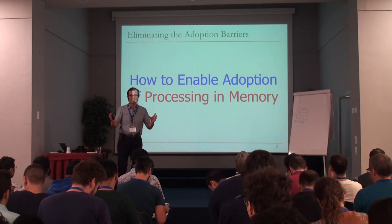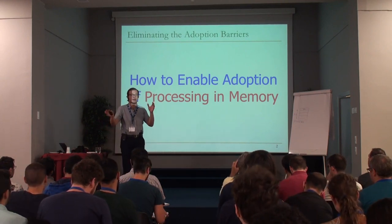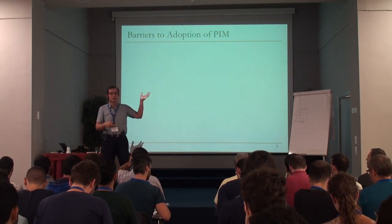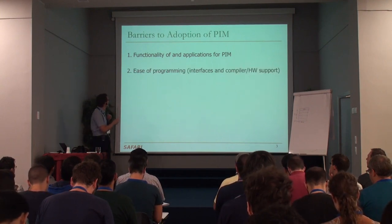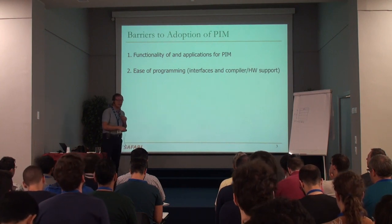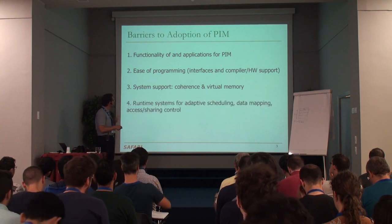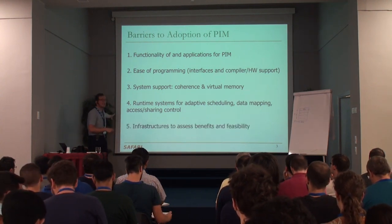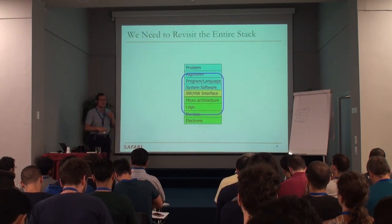Especially if you want to change how systems are completely designed, it's always good to have an adoption path. There are a bunch of adoption issues in processing in memory that were not solved in the old times when this idea was examined: what functionality and applications benefit from PIM, ease of programming, what interfaces should be in the languages, what compiler and hardware support should exist, system support for coherence and virtual memory, runtime systems for adaptive scheduling, data mapping, access and sharing control, and infrastructures to assess benefits and feasibility.